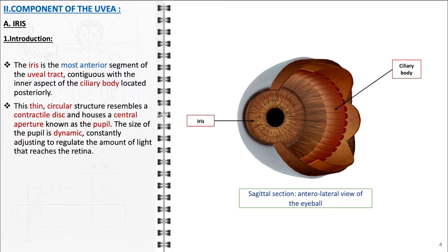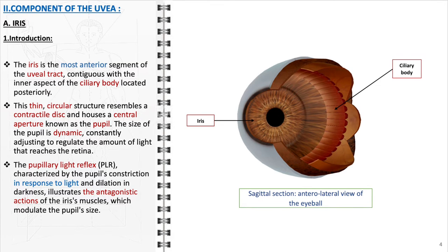The pupil's size is dynamic, continuously adjusting to regulate the volume of light that reaches the retina. The pupillary light reflex is a critical function of the iris, characterized by the pupil's constriction in response to light, followed by dilation in darkness.